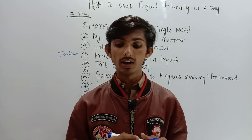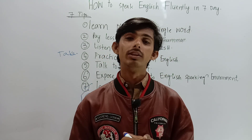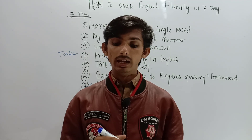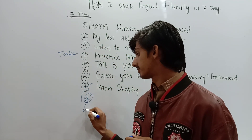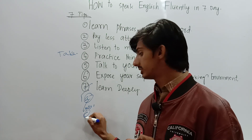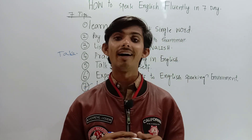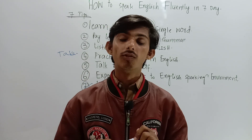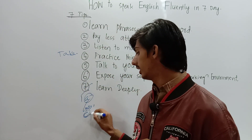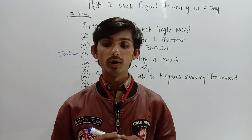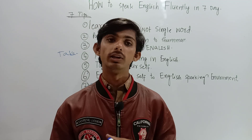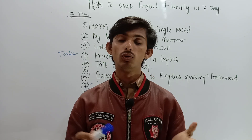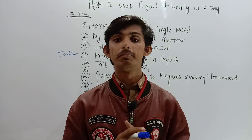Take a topic and write the answer. Write the answer in a diary. The third point is: read the answer aloud. The fourth point is: point out your mistakes. Record your voice on your mobile phone app, then you can identify your mistakes.